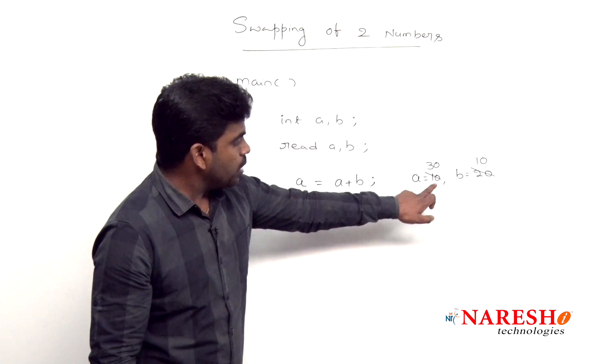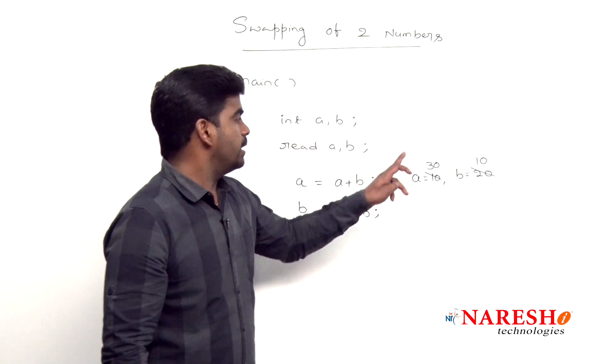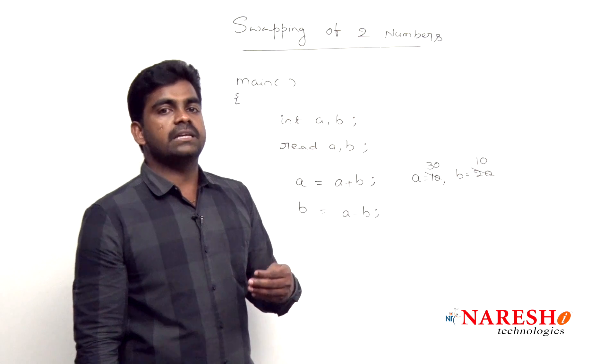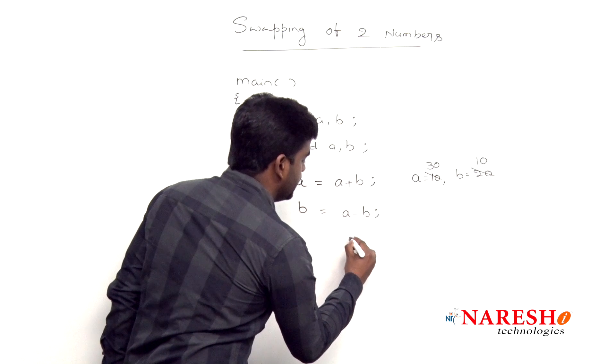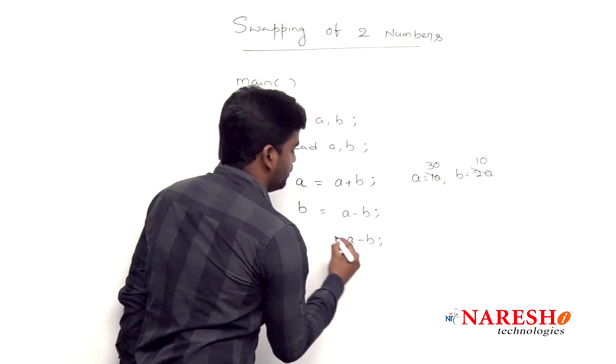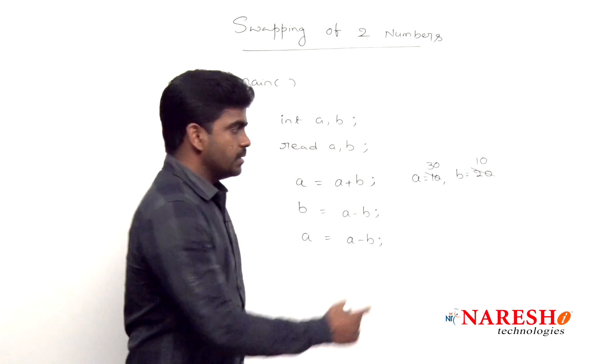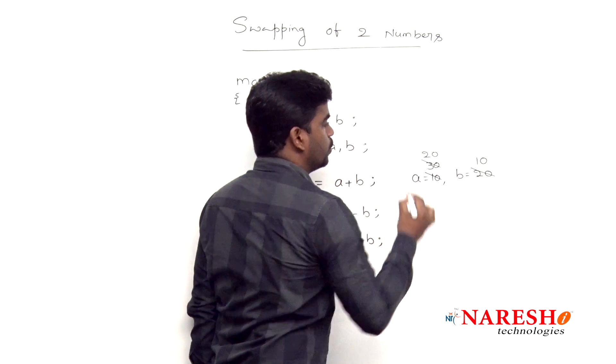Now I want to store the value 20. How you will get the value 20? Again 30 minus 10 will give the value 20. So here again a minus b, we are storing into a. 30 minus 10 value is 20 will go and store.